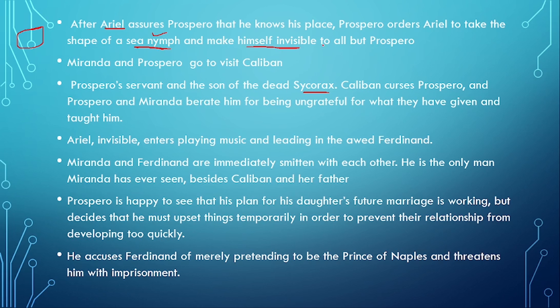Prospero and Miranda go to visit Caliban, who is a servant of Prospero and the son of the dead Sycorax. When Caliban sees Prospero, he starts cursing him. Prospero and Miranda berate him, reminding him of his past — saying that you were so savage, how did you behave? We made you a human. Here we are getting a theme of imperialism and colonialism.